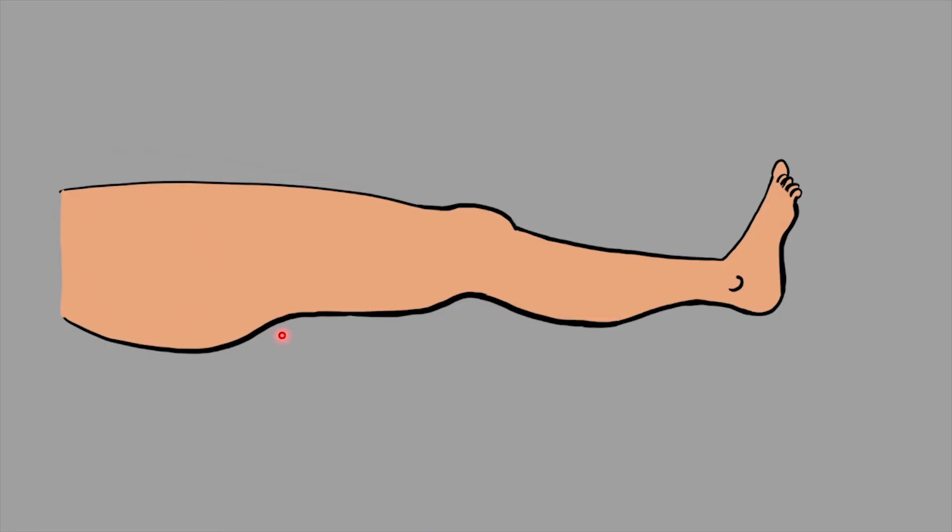First we will have to draw an imaginary line starting from the greater trochanter at the hip to the lateral malleolus at the ankle. This line will be used as a reference line for the placement of strapping around the leg.